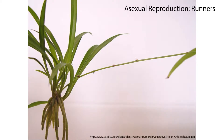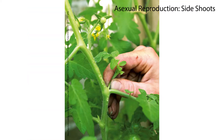One method of asexual reproduction occurs through structures called runners. Runners extend from the mother plant and are similar to stems in structure. They act as a connection between the mother and daughter plant and allow the plant to spread out quickly. Another structure is side shoots, which branch off from the main stem of the plant and grow the plant outward.